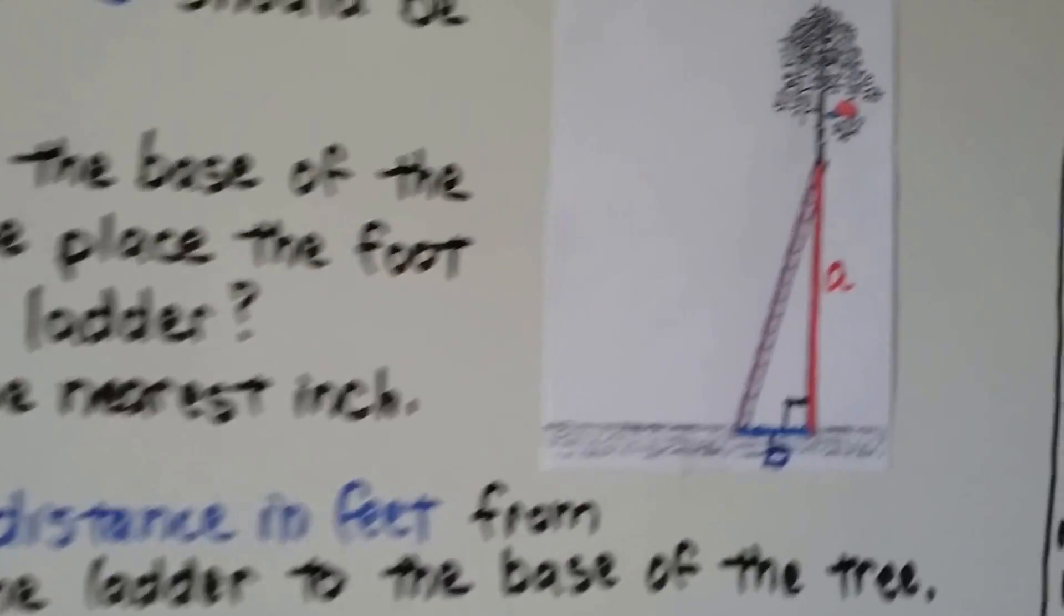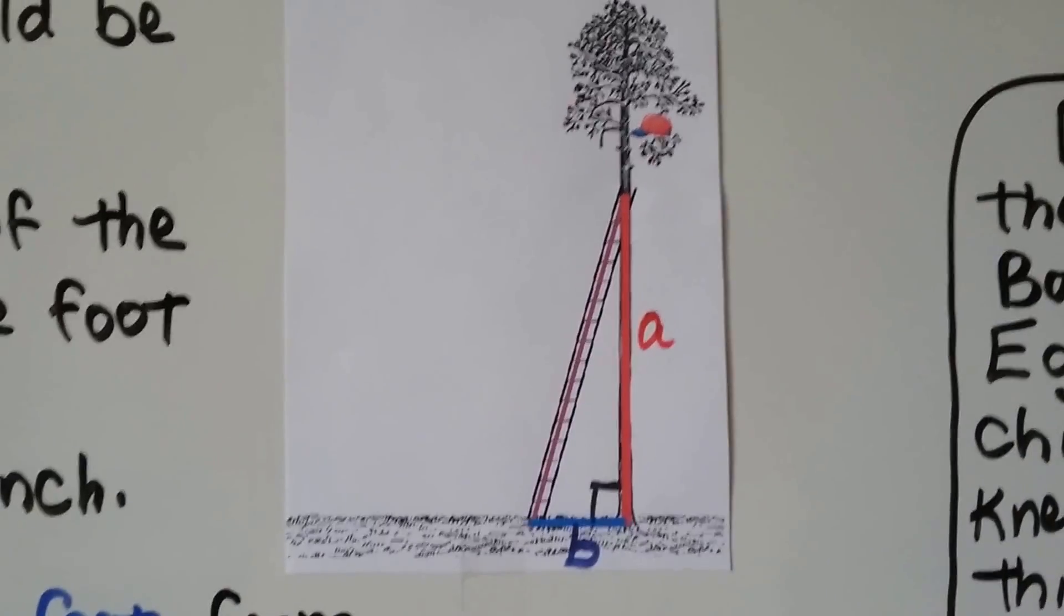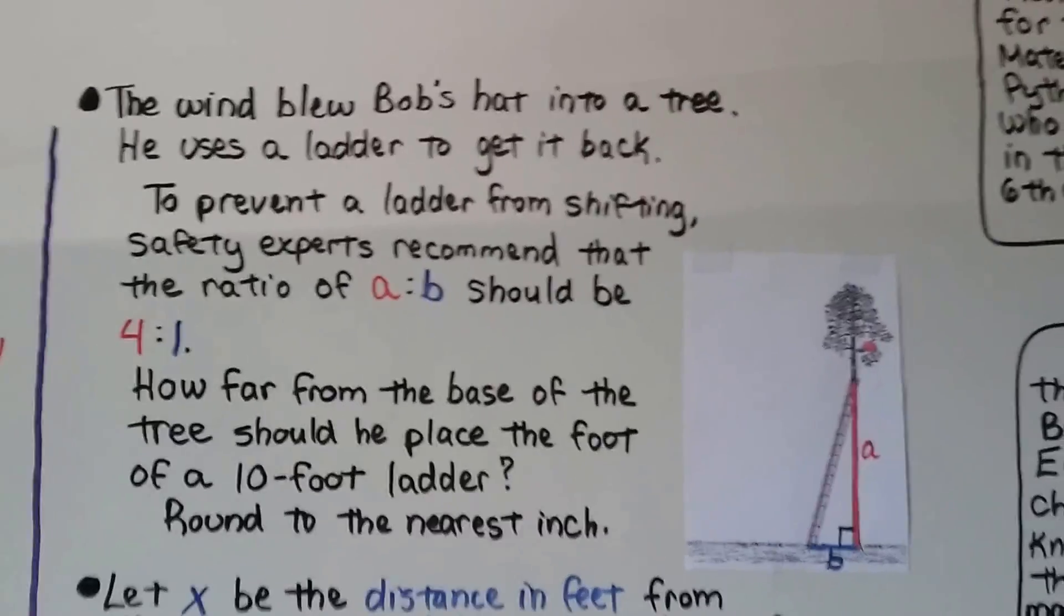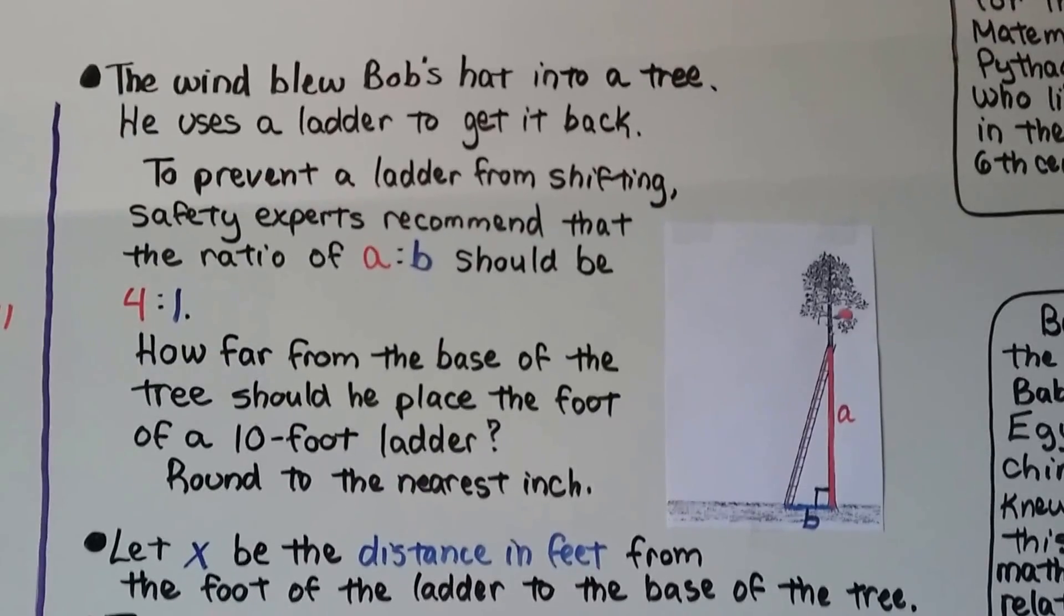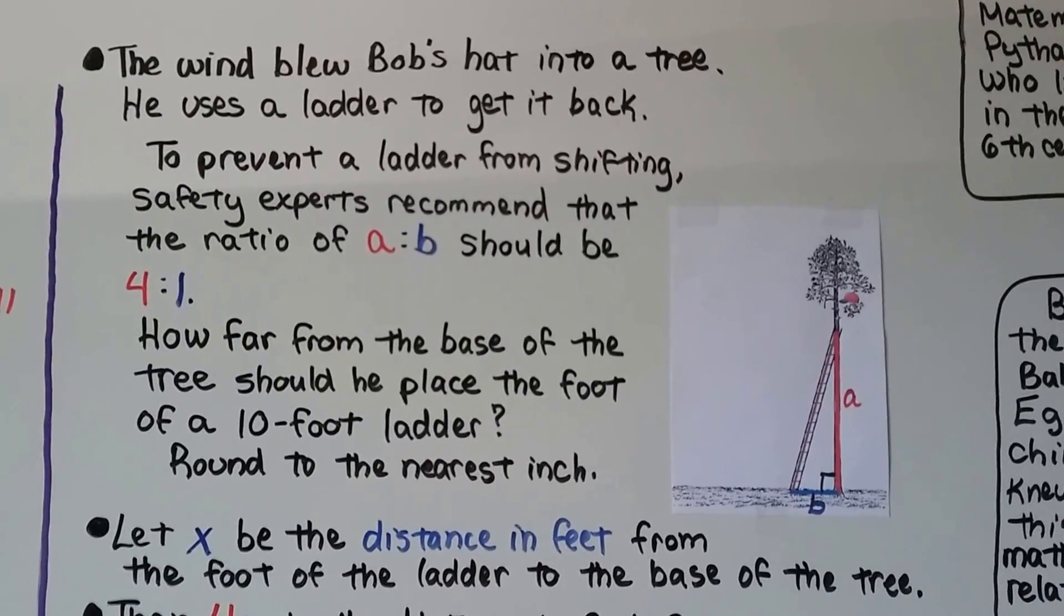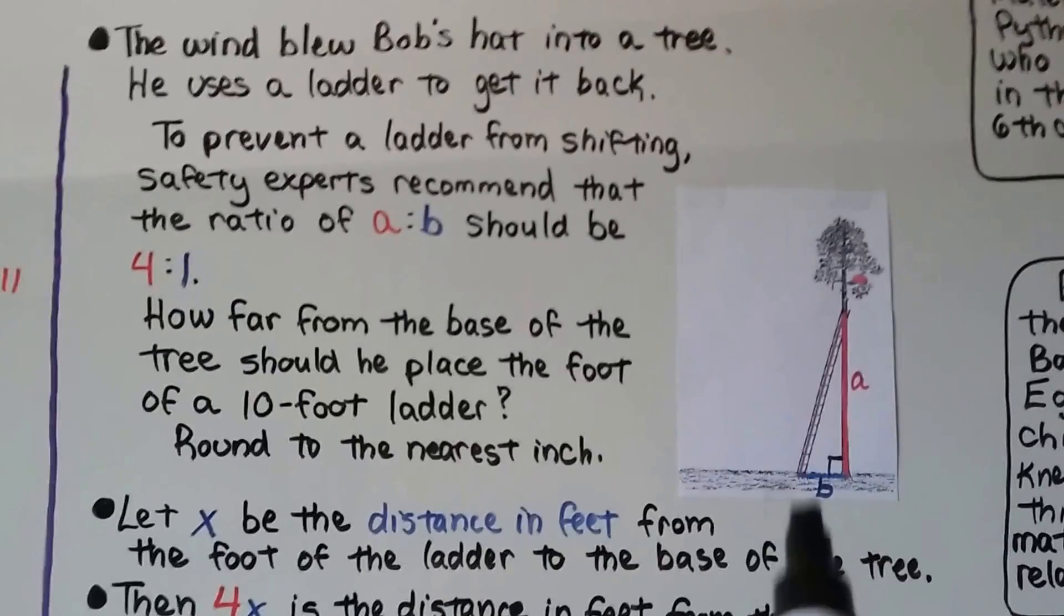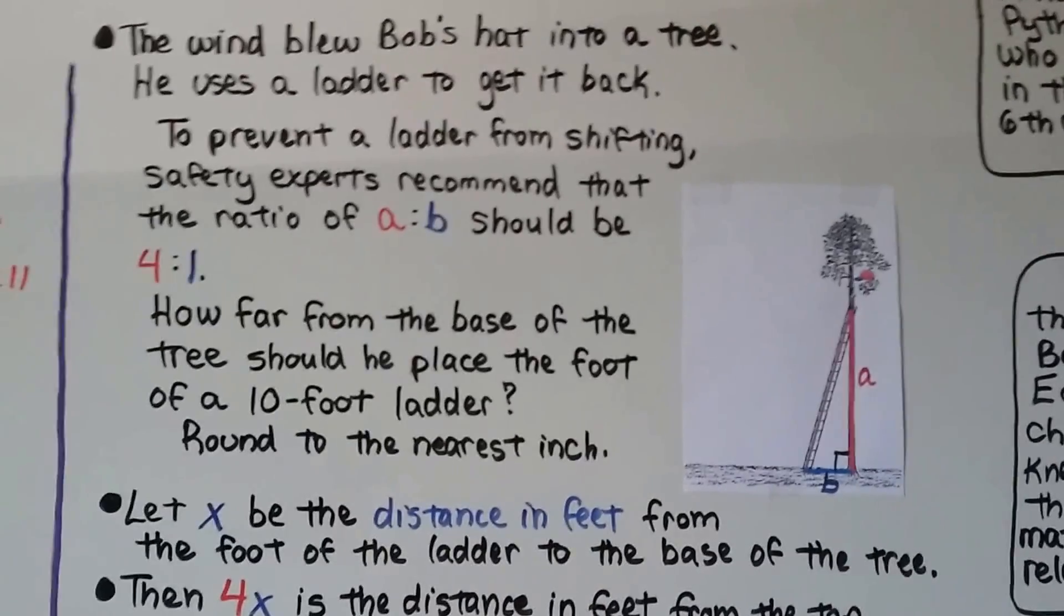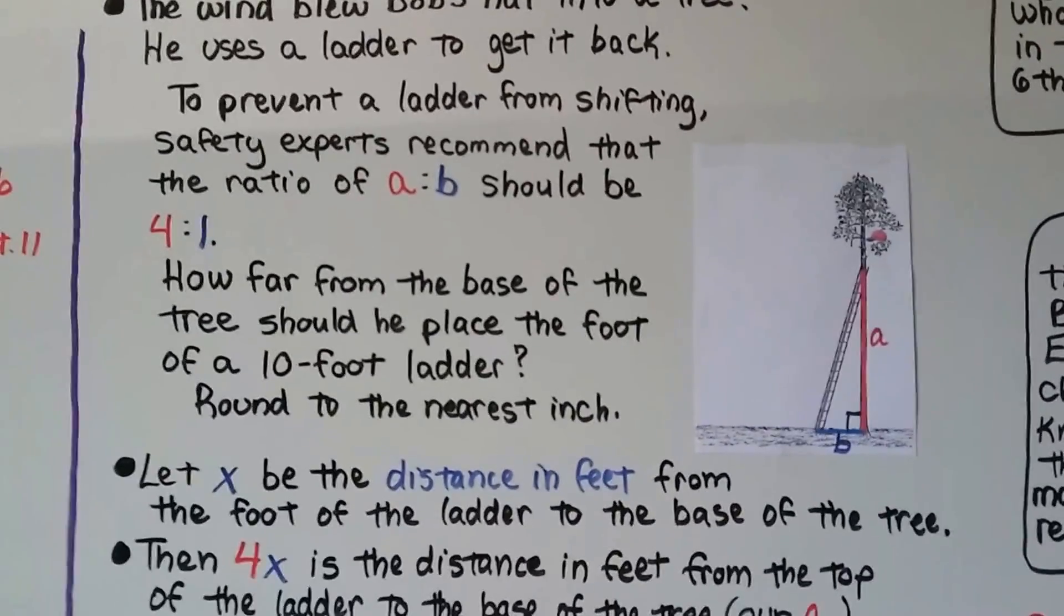Take a look at this picture. There's a baseball hat in the tree. And there's a ladder up against the tree. So the wind blew Bob's hat into a tree. And he uses a ladder to get it back. And to prevent a ladder from shifting, safety experts recommend that the ratio of A to B should be 4 to 1. So this A to B should be 4 to 1.